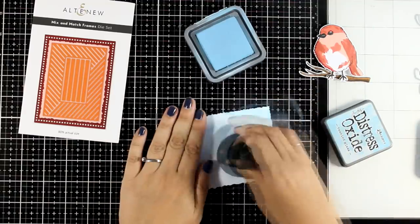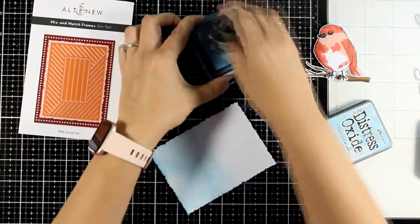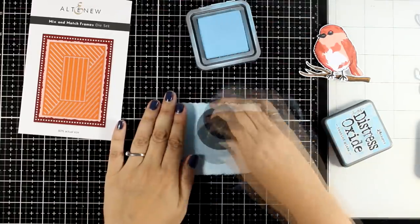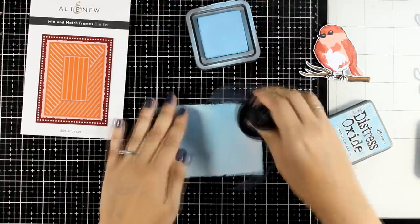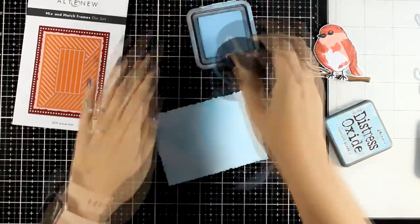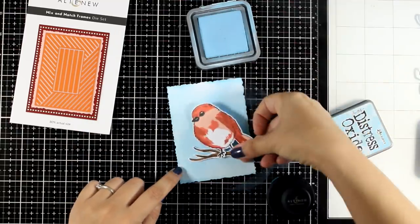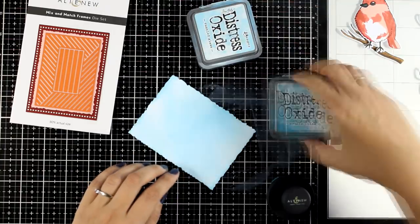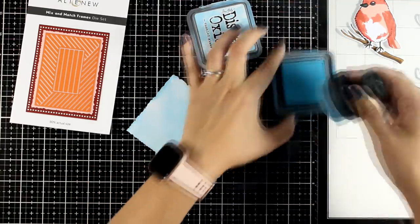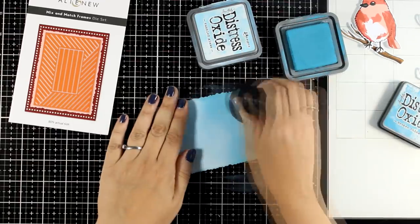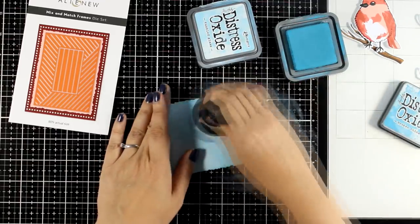So now I'm creating a background for my bird and I'm going for a winter scene for a winter card. I used one of the dies from the mix and match frames to cut out this white panel. And I'm inking it up with a couple of shades of blue. I'm not going for the perfect blending here. I like to have some splotches. It looks more like a sky if you don't have a completely perfect and super smooth blending.